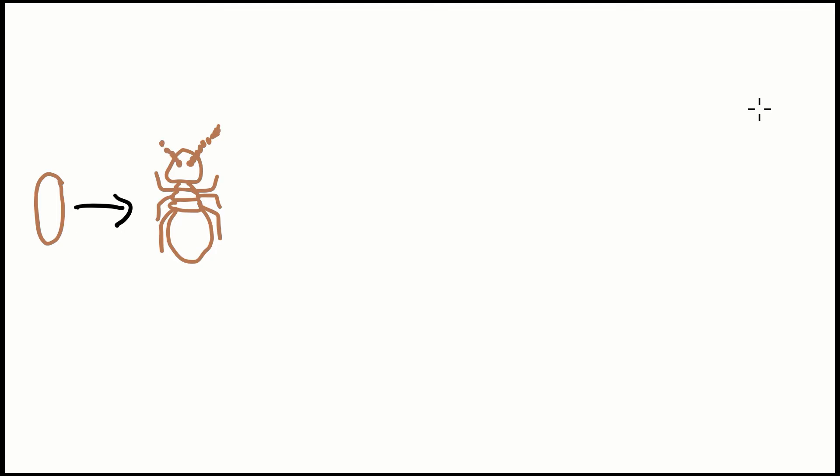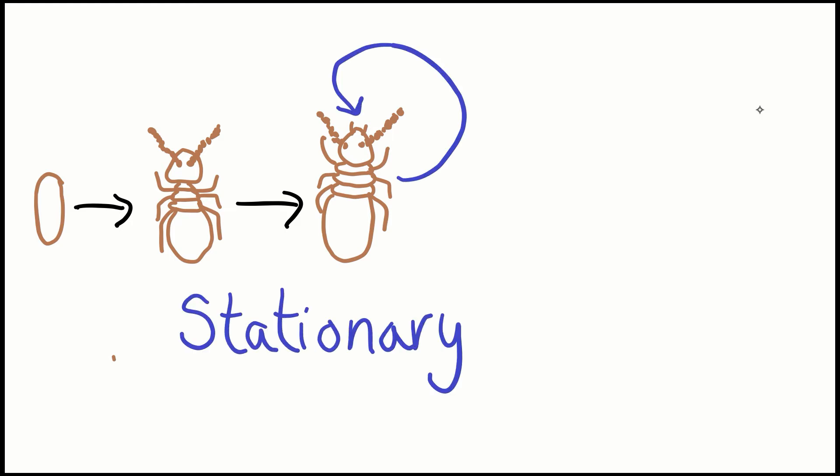The worker termites will feed their young for about two weeks. Afterwards, those immatures will molt into workers. This stage in the termite's life is still considered immature, as they do not have developed reproduction organs or eyes. Termites are interesting in that they have the ability to shed their exoskeleton and stay the same size. This is what's called a stationary molt. They will molt their exoskeleton, but they do not grow.